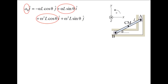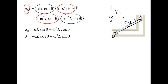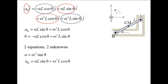Plug in the expressions for all the terms and evaluate the cross products. Equating the x terms and the y terms, we obtain two equations. We have two equations and two unknowns and can solve for alpha and the acceleration of point B. The angular acceleration is 77.02 radians per second squared in the counterclockwise direction. Point B is accelerating at a rate of 30.81 meters per second squared in the positive x direction, which means point B is slowing down since the velocity of point B is in the negative x direction.